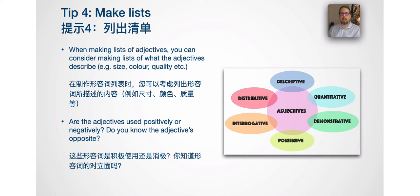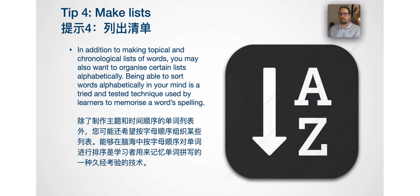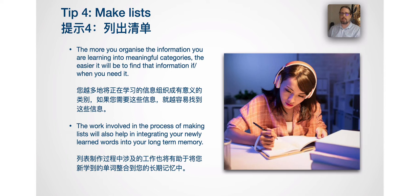When making lists of adjectives, you can consider making lists of what the adjectives describe — for example, adjectives of size, color, quality, and so on. Are the adjectives used positively or negatively? Do you know the adjective's opposite? In addition to topical and chronological lists, you may also want to organize certain lists alphabetically. Sorting words alphabetically is a tried and tested technique to memorize word spelling. The more you organize information into meaningful categories, the easier it will be to find that information later. The work involved in making lists also helps integrate newly learned words into your long-term memory.